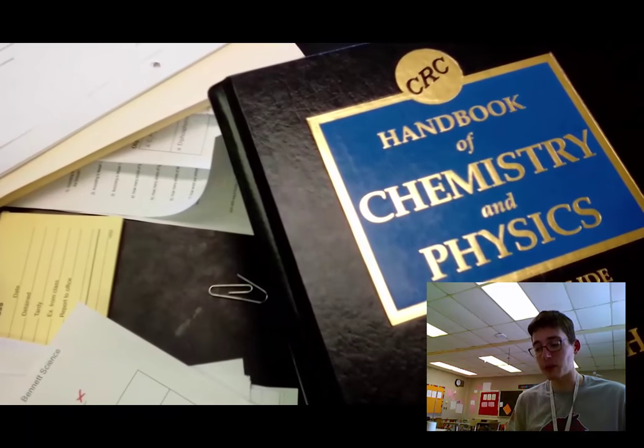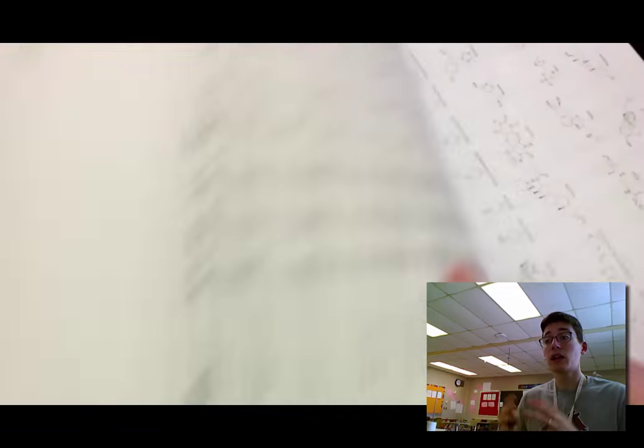Then we can take those atoms and combine them in specific ways to make these things we call compounds and molecules. Some are ionic with positives and negatives. Others are not ionic. They're called covalent. They overlap.